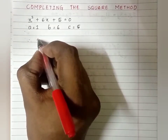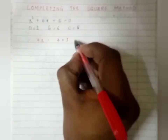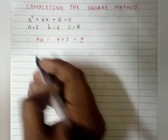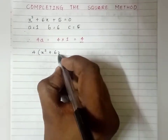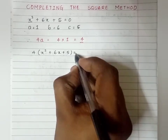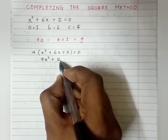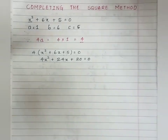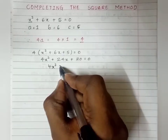The first step is finding out the value of 4a. Here a is 1, so 4 times 1 is 4. Now I'll multiply this 4 throughout the equation: 4 into x² + 6x + 5 = 0 gives 4x² + 24x + 20 = 0.